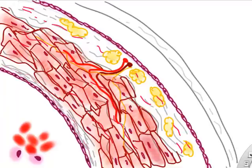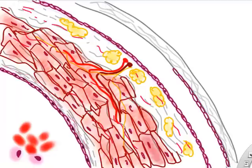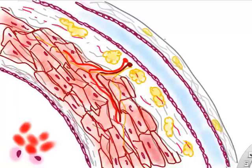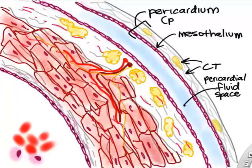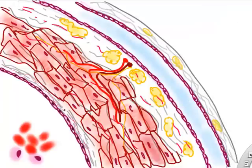Around the heart we put a 'ziplock bag' made of connective tissue, covering mesothelial cells, and some fat — this is called the pericardium. There is a little pericardial fluid in the pericardial space between that bag and the heart. This layer of connective tissue and mesothelium is called the pericardium, or parietal pericardium. Doctors and nurses usually just call it the pericardium.